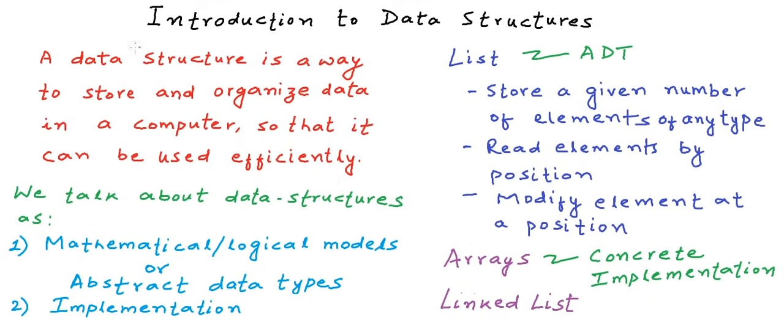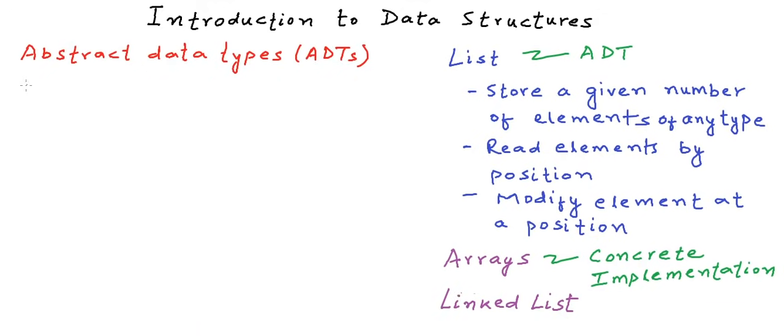Let's define an abstract data type formally, because this is one term that we will encounter quite often. Abstract data types are entities that are definitions of data and operations, but do not have implementations. So they do not have any implementation details.